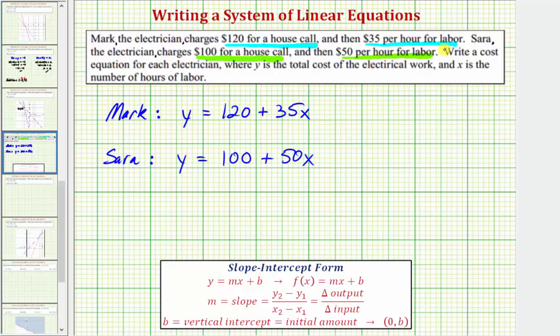Or in this case, the hourly cost of labor, and b is equal to the vertical intercept, or in this case, the initial amount or starting amount of the total cost, which is the cost for the house call. So let's go ahead and rewrite these equations in slope-intercept form by changing the order of the terms on the right.